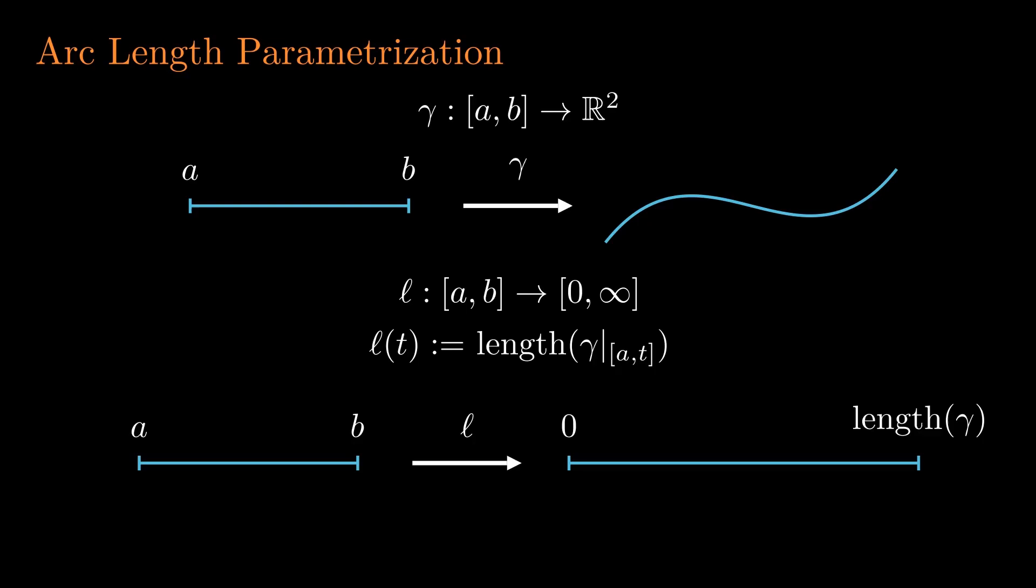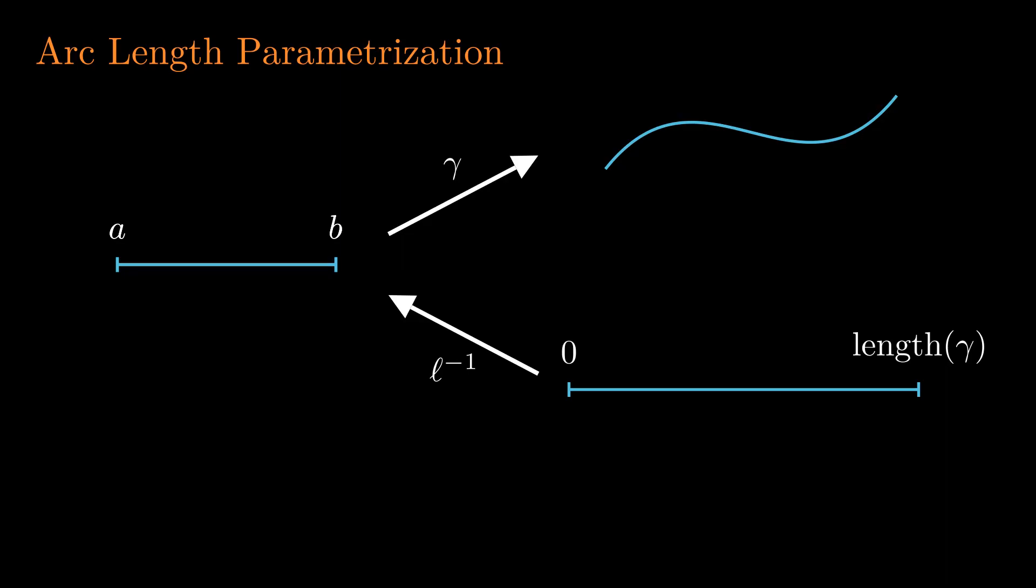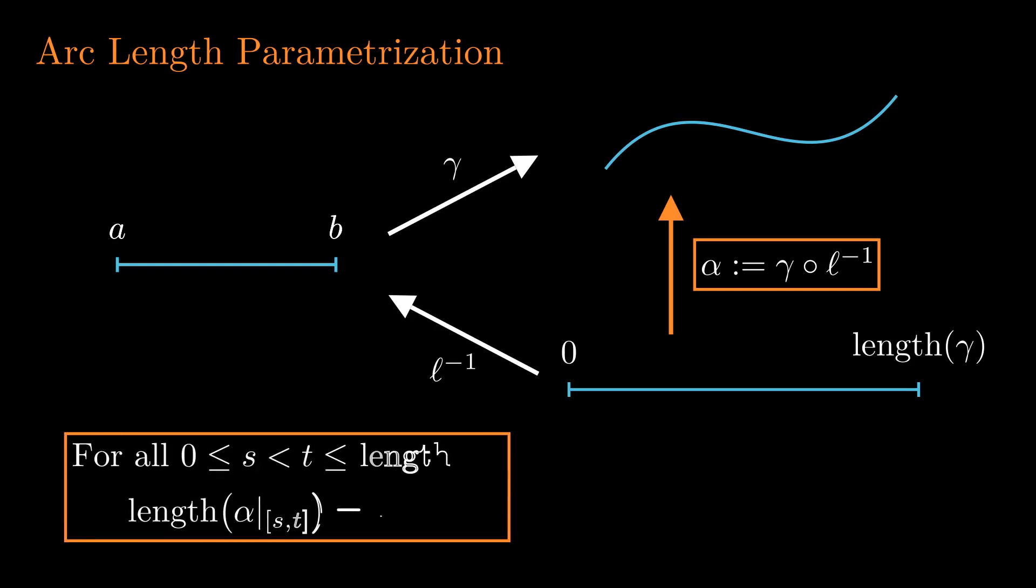Since this function is monotone, one could build the inverse function, and something very interesting happens when we compose this inverse function with γ. We get a curve α with a very special property that sends its domain to the plane without shrinking or stretching. In other words, for each subinterval [s,t] in its domain, the length of α restricted to such interval is precisely the length of the interval t minus s. This function α is going to be called the arc length parametrization of the curve γ. Thank you.